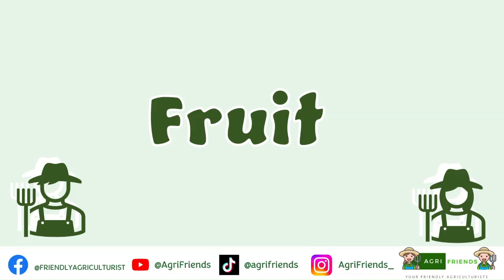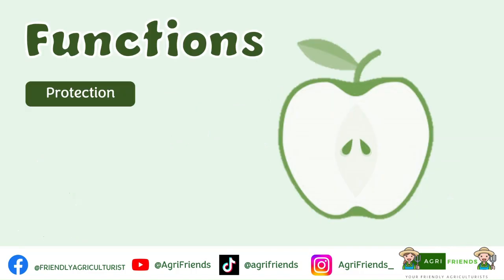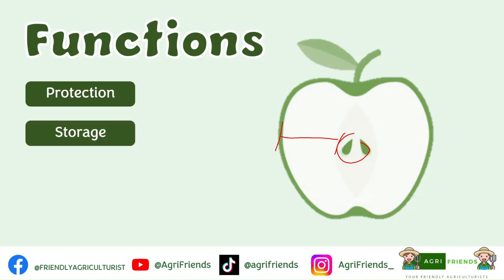A fruit is a mature ripened ovary that contains the seed or ripened ovules. One function of the fruit is to protect the seeds from adverse environmental effects. So these are the seeds and this part protects the seeds from external factors. And that fleshy part of the fruit is responsible for storing food and nutrients that attracts animals, and once animals fed on the fruits, they aid in the dispersal of seeds.